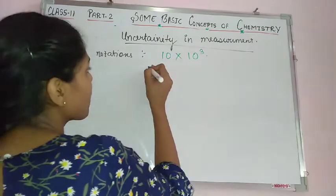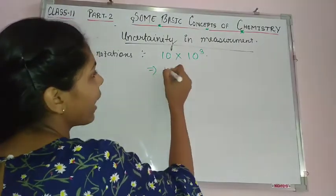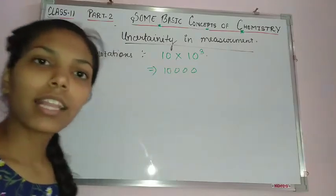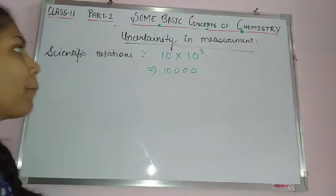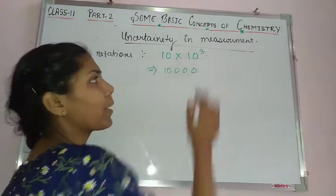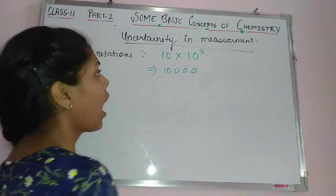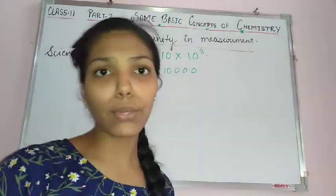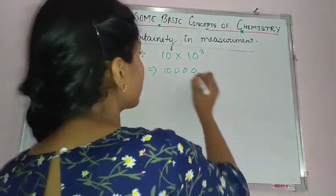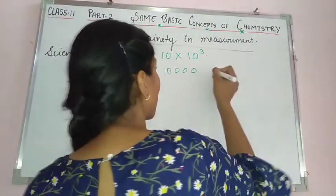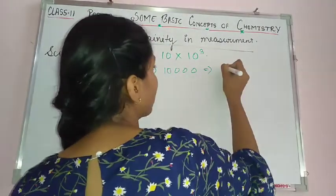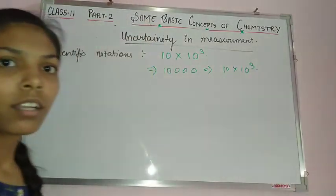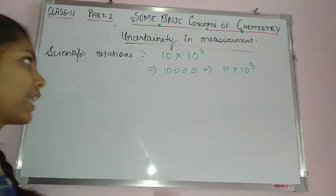We have written this in the form of a power of 10, which is scientific notation. This means there is some precision involved when we write a number in scientific notation. For example, 7.5 × 10⁵ is a scientific notation.